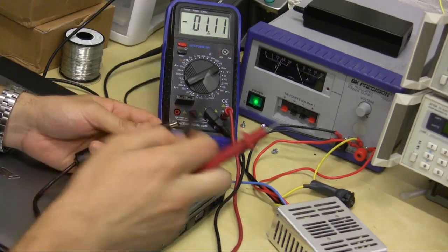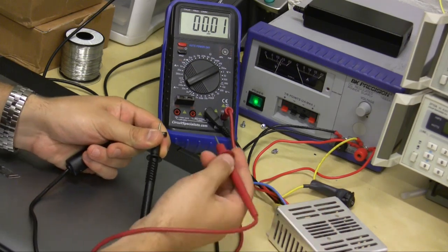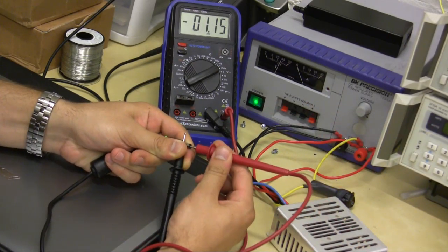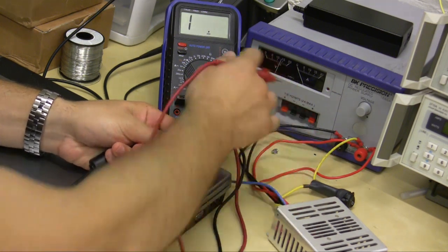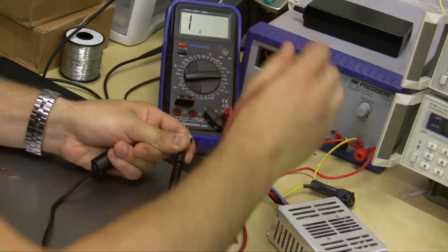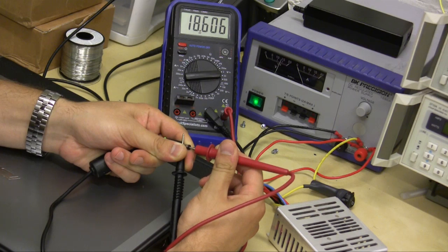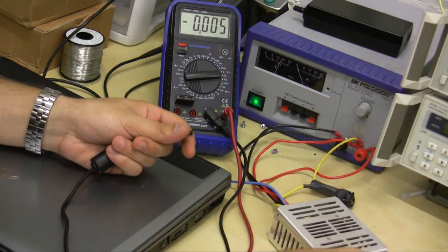So what I'm going to do, this is the negative. I'm going to apply it to the outside of the barrel connector and put the positive on the inside and look at the voltmeter. Alright, I have 18.6 volts. It should be more than enough to power my laptop.